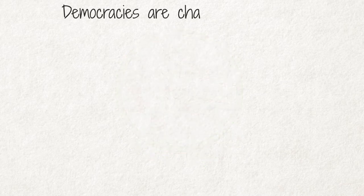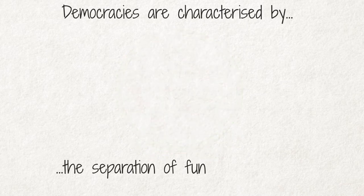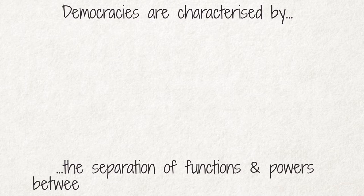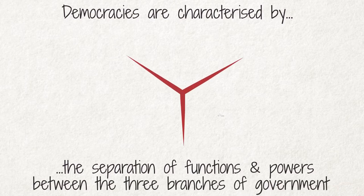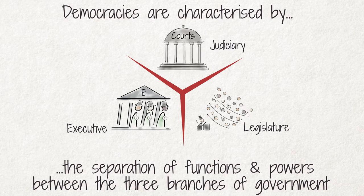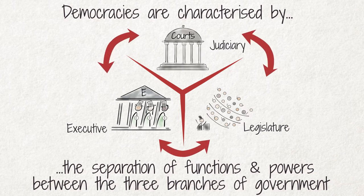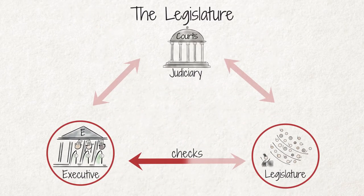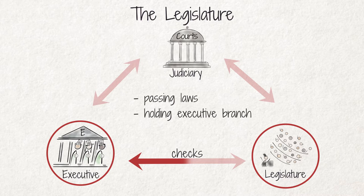Democracies are characterized by the separation of functions and powers between the three branches of government: the legislature, the executive, and the judiciary. Each branch checks the power of the other two so that there is a balance of power between them. The legislature is responsible for passing laws and for holding the executive branch of government accountable.